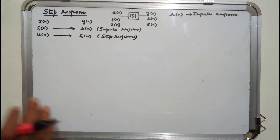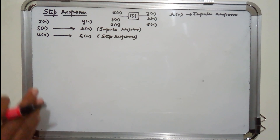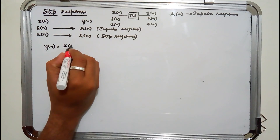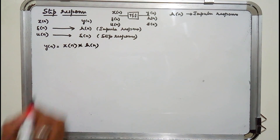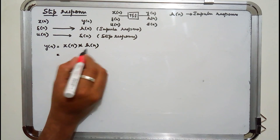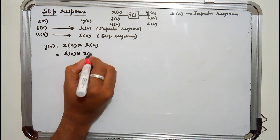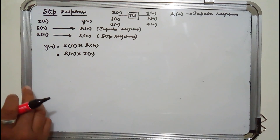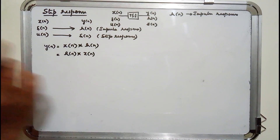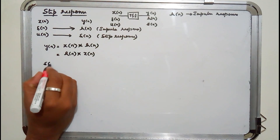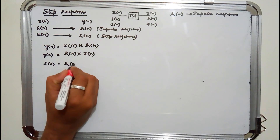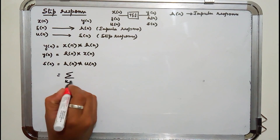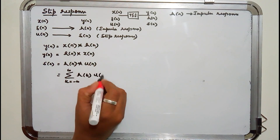Now we'll try to get a relationship between step response and impulse response. We know that y of n equals output x of n convolved with h of n — this is the convolution sum for the discrete case. I can interchange these using the commutative property. When input x of n is u of n, output y of n is s of n. So s of n equals h of n convolved with u of n, which is summation k from minus infinity to infinity of h of k times u of n minus k.